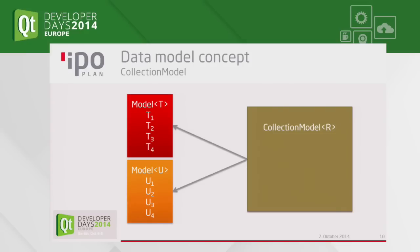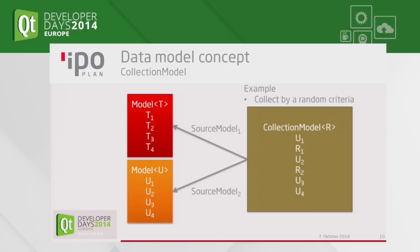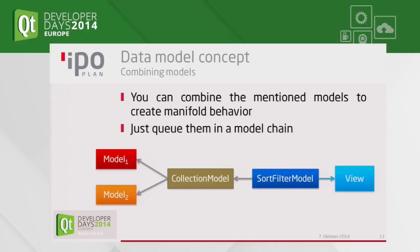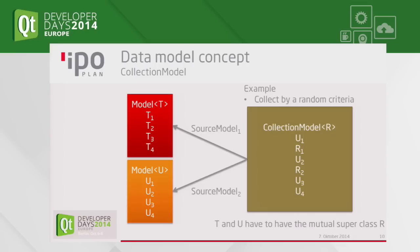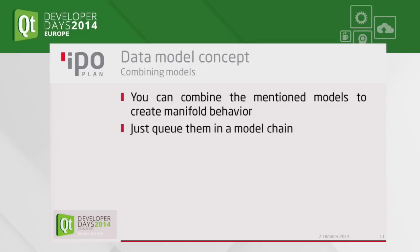Another model is the collection model. Assume you have two different models — type T and type U — and you need to represent them in the GUI as one model. For example, you collect by random criteria from model 1 (items 1 and 2) and from model 2 (items 1 through 4), but items R3 and R4 are missing from the first model. Keep in mind that T and U must have a mutual superclass R. You can combine these — use a collection model to merge them under one type, then use a sort filter model and delegate that to the view.